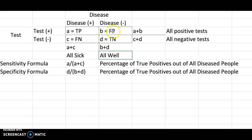Over here we have people that test positive but don't have the disease. We gave examples in class about people with autoimmune disorders — if you're testing serology, their serology is often not accurate. Whereas d is our true negatives, who test negative and do not have the disease. In any microbiological, virology, or serology test, you want to maximize true negatives and true positives, and you don't want a high percentage of false positives or false negatives.